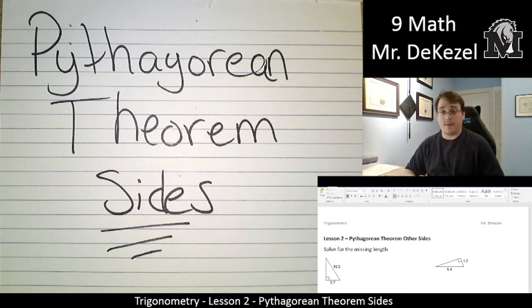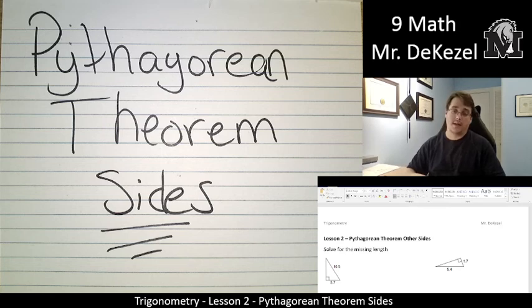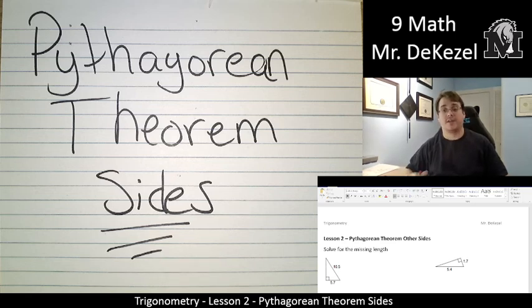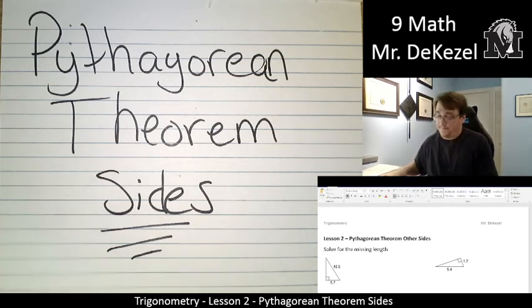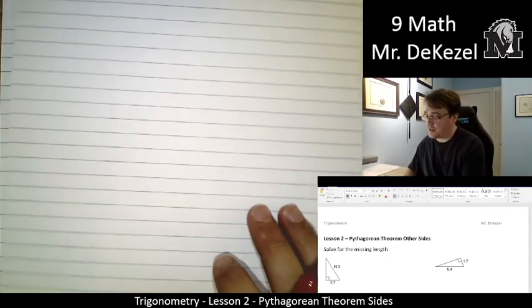Hello, grade 9 math class. Welcome back to another lesson. Today we are doing number 2 of the trigonometry unit. We're going to talk about the Pythagorean theorem when we're looking for sides that are not the hypotenuse, sides that are not the longest side. These are sides that are beside the right angle in that triangle. I think the best way is to do some examples.